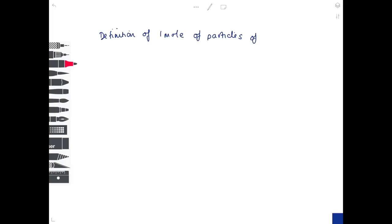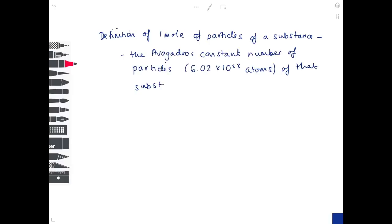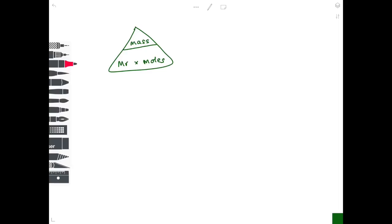One mole of particles of a substance is the Avogadro's constant number of particles — 6.02 × 10²³ atoms — and represents a mass equal to the relative particle mass in grams. Using the formula triangle: mass = Mr × moles; moles = mass ÷ Mr.